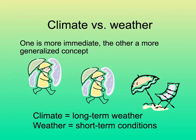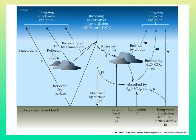Climate and weather are related, but one is more immediate and around us, and the other is a more generalized idea. Climate refers to long-term weather — the combination of temperature and precipitation — while weather is the short-term conditions, what it might be like on any given day.